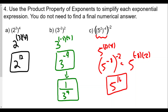Remember: a negative exponent does not necessarily make the number negative. It means we put that base over as a denominator — one over that number with the positive exponent. Think of a negative exponent as the number crossing the fraction bar and becoming a positive exponent.